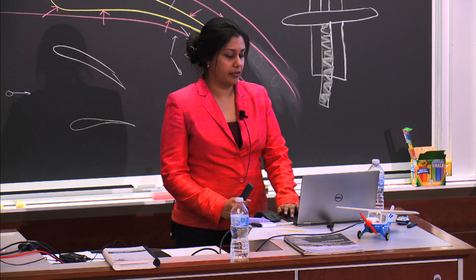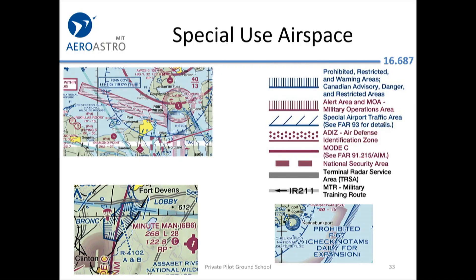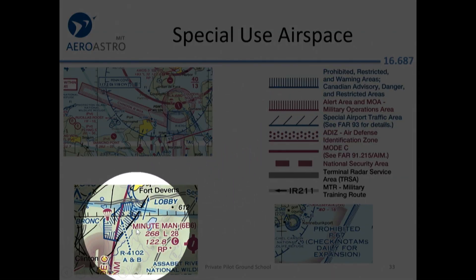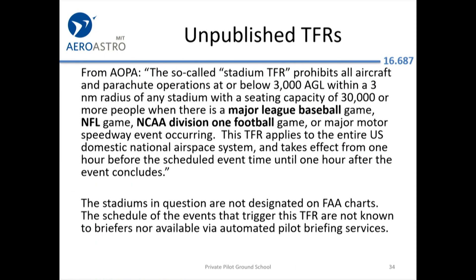And then you have a whole bunch more blue and magenta lines that mean different things, describing all of the different types of environments we talked about. We also talked about TFRs, the temporary flight restrictions. There are some that are unpublished — over stadiums or over football games — and sometimes you won't see those published in advance. But in general, it's a good idea to be aware when you're going over a stadium not to be too low over it.